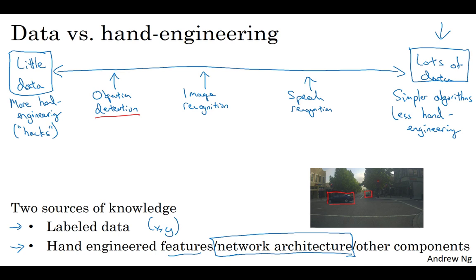But I think historically, the field of computer vision has used very small datasets. And so historically, the computer vision literature has relied on a lot of hand engineering. And even though in the last few years, the amount of data we throw at computer vision tasks has increased dramatically,